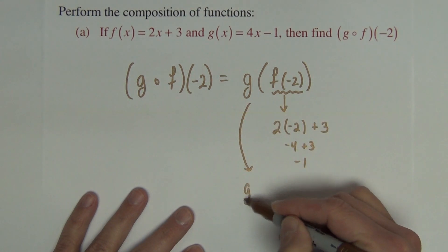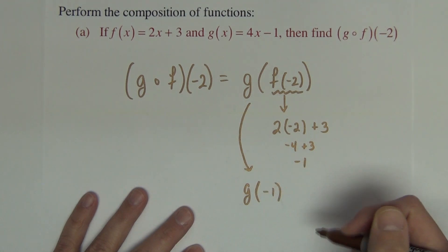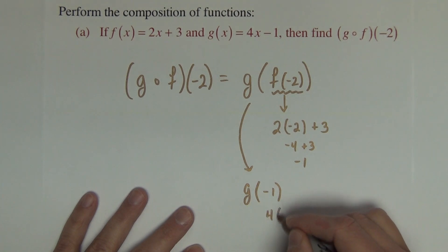f of negative 1. And now we want g of that solution, negative 1. So into the g function, which is 4x minus 1. Then in for the x goes negative 1. And 4 times negative 1 minus 1 more is negative 5. And finished.